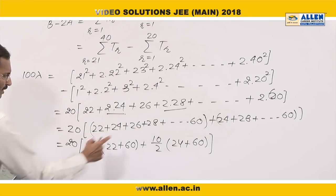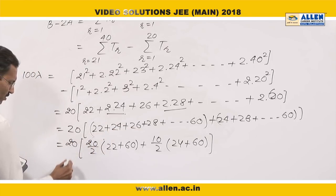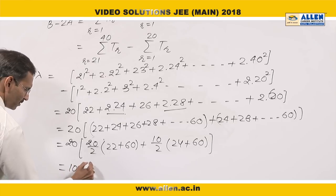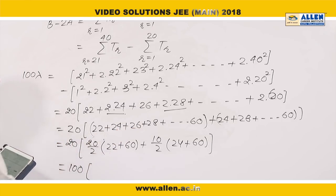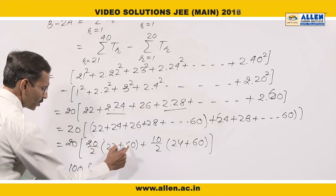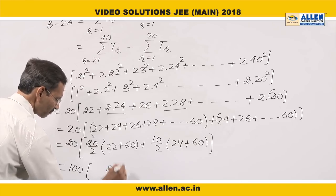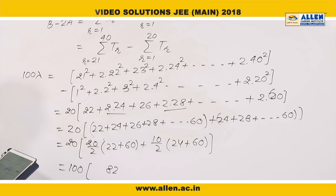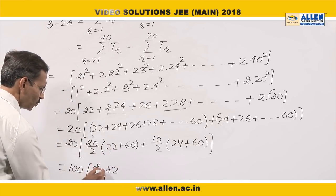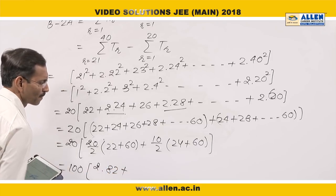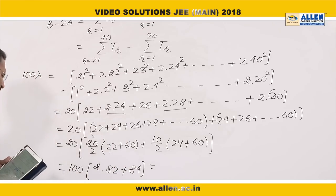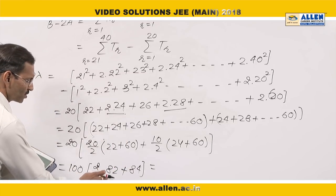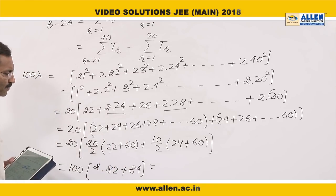Half is common and 10 is common. So it is 100 outside. We have taken 5 as the common factor. What is left here is 22 plus 60 is 82 and 2 into 82 plus 84. This gives us 164 plus 84.